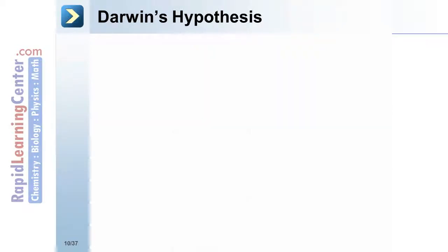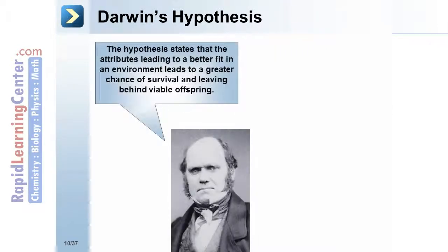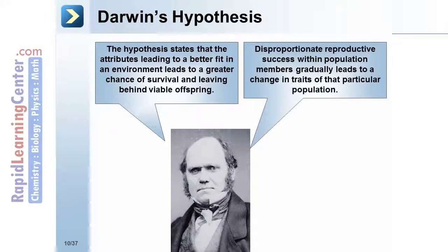Darwin's hypothesis states that the attributes leading to a better fit in an environment lead to a greater chance of survival and leaving behind viable offspring. Disproportionate reproductive success within population members gradually leads to a change in traits of that particular population.